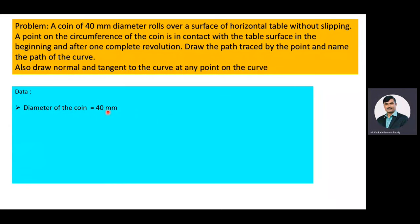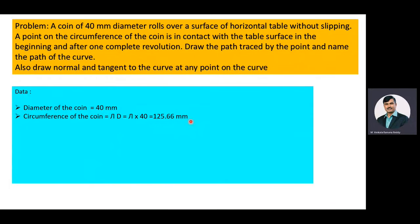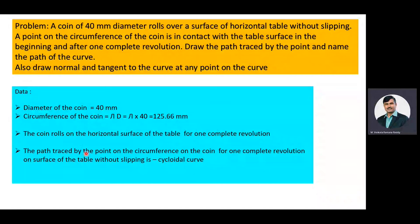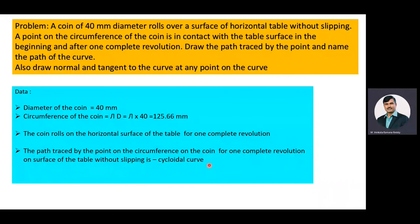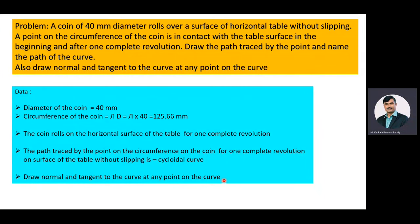The diameter of the coin is 40 mm, and the circumference of the coin equals πd = π × 40 = 125.66 mm. The coin rolls on the surface of the table for one complete revolution. The path traced by the point on the circumference for one complete revolution without slipping is a cycloidal curve. Our objective is to construct the cycloidal curve and draw the normal and tangent to it at any point.